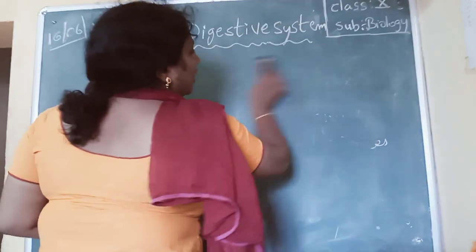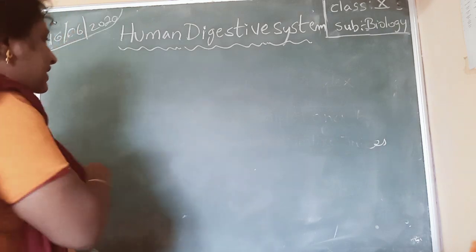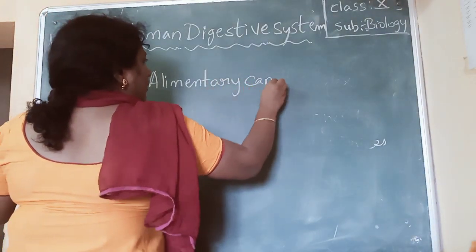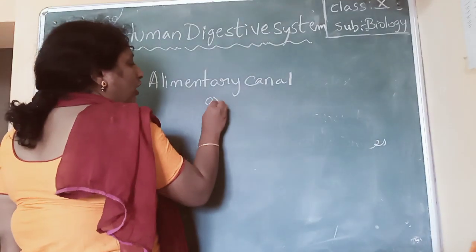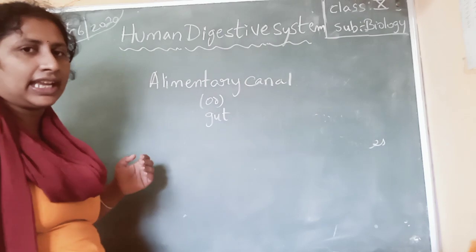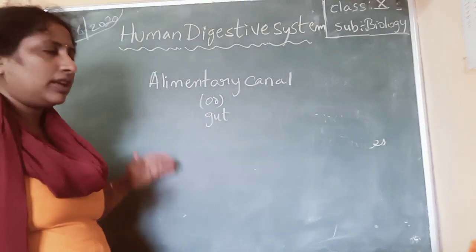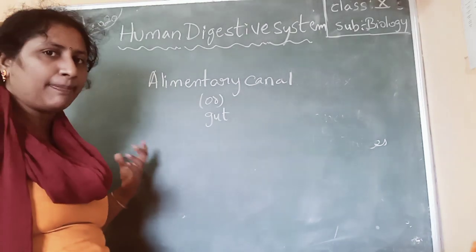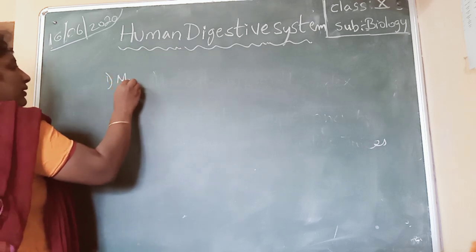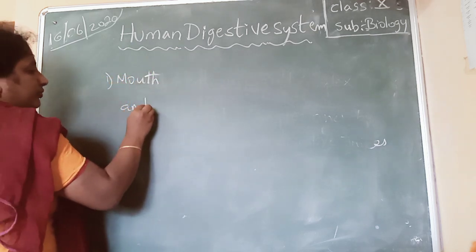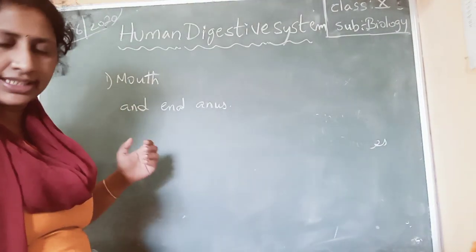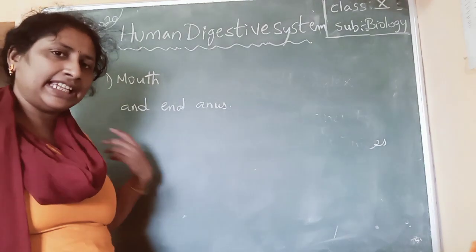Now, coming to the human digestive system. The human digestive system is called the alimentary canal, or you can simply call it the gut. Several parts are present in this alimentary canal. It is a long tube which starts with the mouth and ends with the anus, with several parts in between. Let us look at how digestion takes place in each and every part.